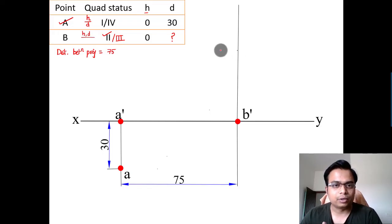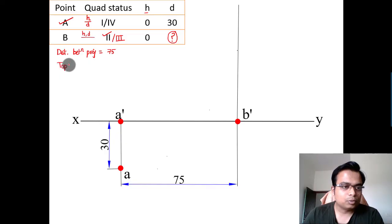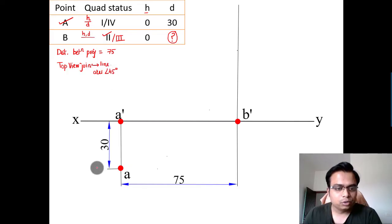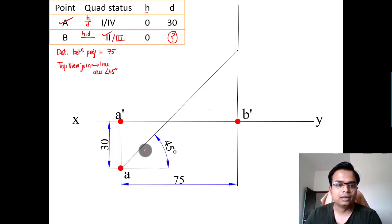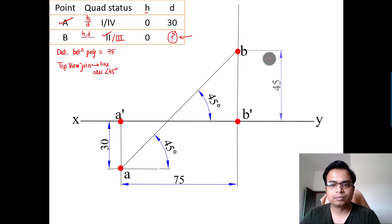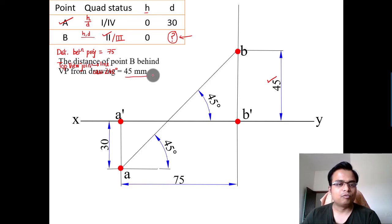We don't yet know the upward length for B's top view, but we do know that when you join the top views of A and B, the line makes an angle of 45 degrees with the XY line. So place a protractor at point A's top view and draw a line at 45 degrees. Wherever this line intersects the vertical projector of B gives the precise location of B's top view. Calculating this distance, it works out to 45mm. Therefore, point B is 45mm behind the vertical plane.